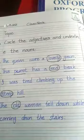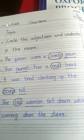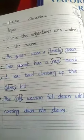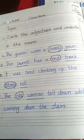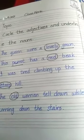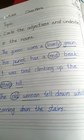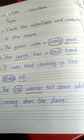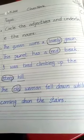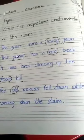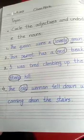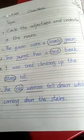Students, exercise A: circle the adjectives and underline the noun. Number one: the queen wore a lovely gown — 'lovely' is the adjective of the noun 'gown'. Number two: this parrot has a red beak — 'red' is the adjective of the noun 'beak', and 'parrot' is also a noun.